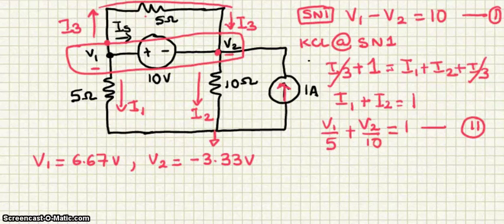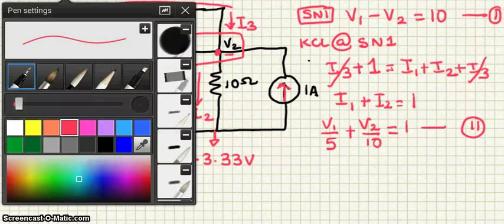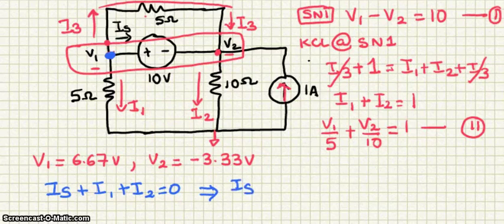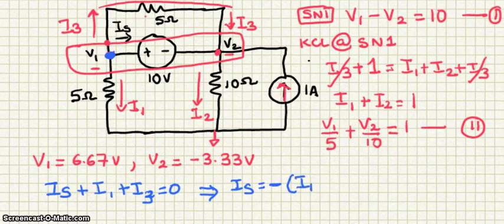Now that we've figured out V1 and V2, how do we find IS? To find IS, let's concentrate on node V1. At node V1, applying KCL, the total current coming out of that node: IS plus I1 plus I3 is equal to 0. So IS can be written as negative of I1 plus I3.